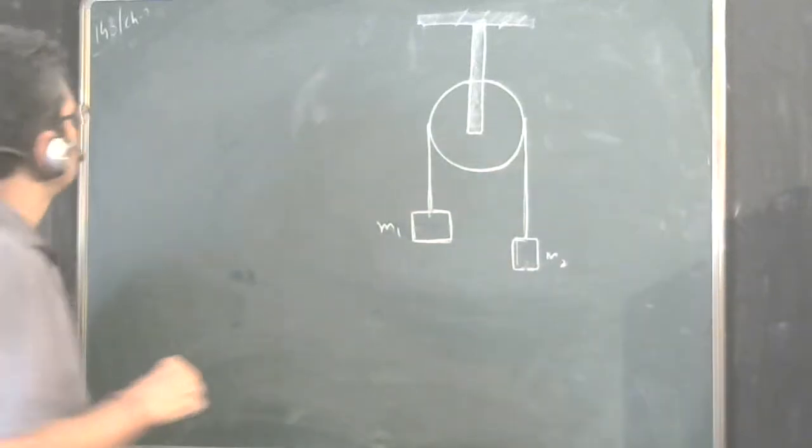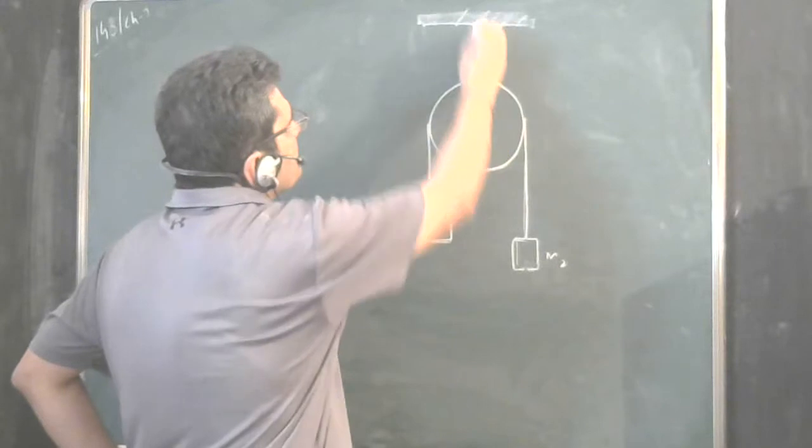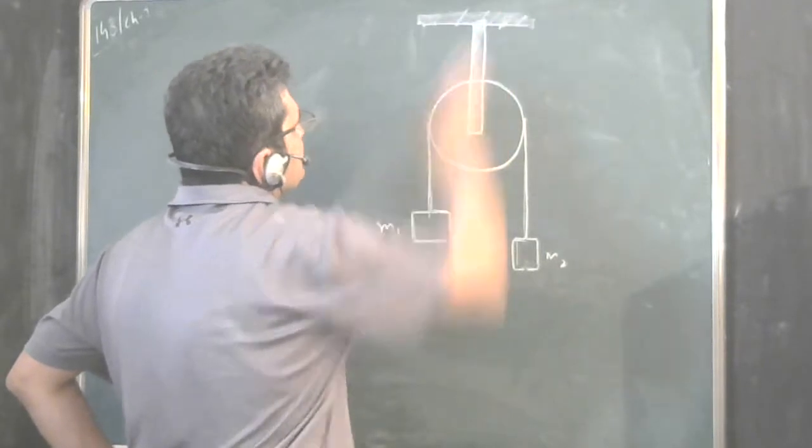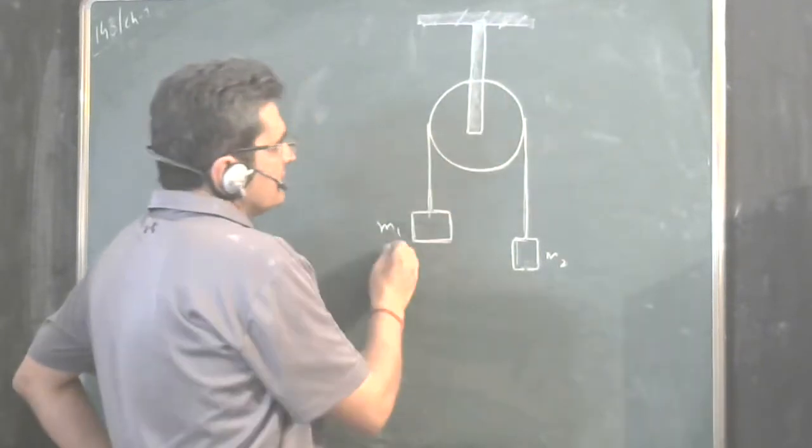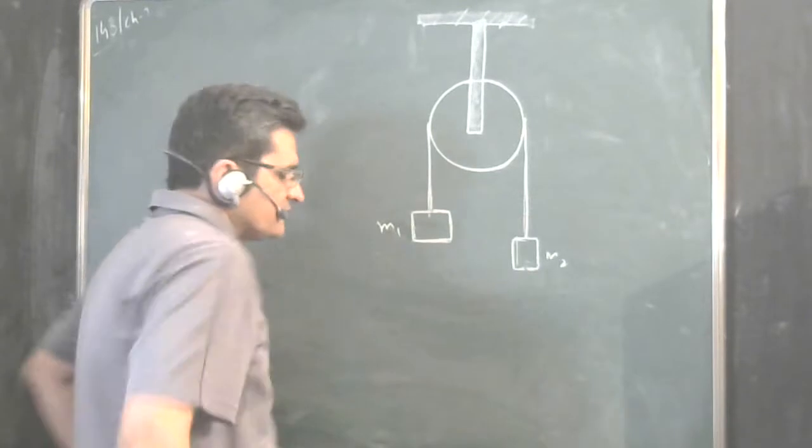We will solve Erodo problem 143. In this problem there is a pulley mounted and attached to a ceiling. There are two masses M1 and M2.